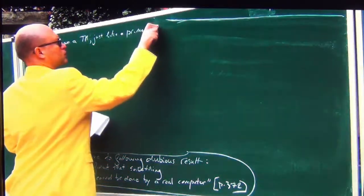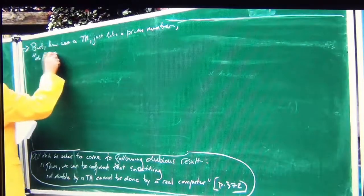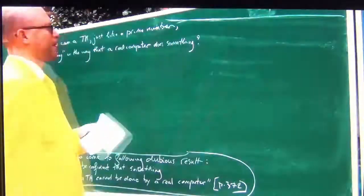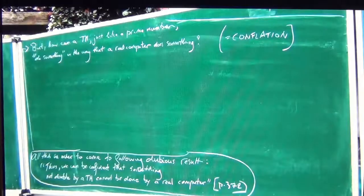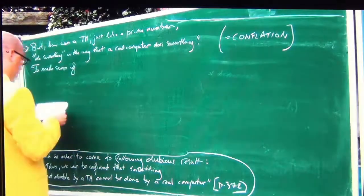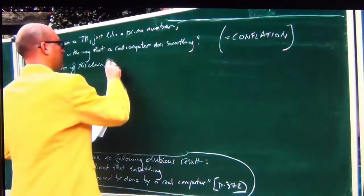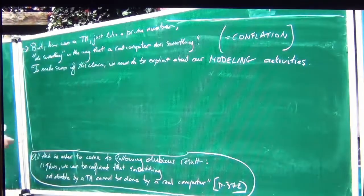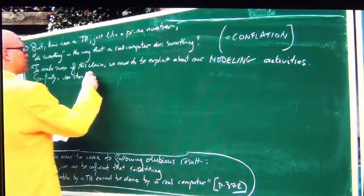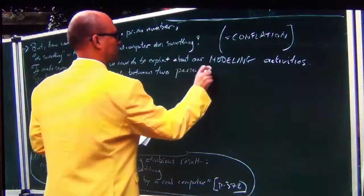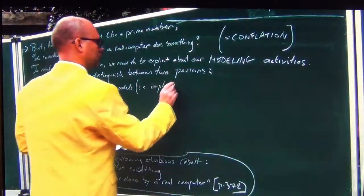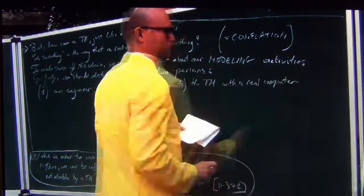To make sense of this claim — and I'm not even a philosopher, but apparently I'm rather philosophically inclined — for many computer scientists, we need to be explicit about our modelling activities. This is basically Dave Parnas's message. Specifically we should distinguish between two persons: an engineer who models, i.e., who implements the Turing machine with a real computer, and secondly a scientist who mathematically models part of the real world — in this case, mathematically models the real computer with a Turing machine.